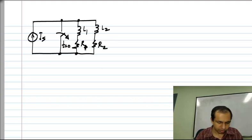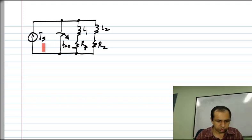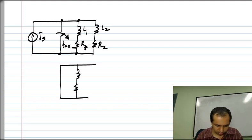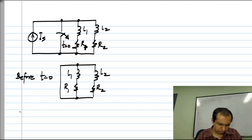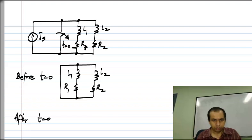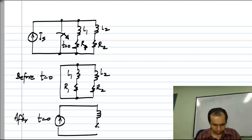First, we will determine the order of the circuit. Before t = 0, the switch is short-circuited and all of the current flows into the short circuit, giving an effective simplified circuit. After t = 0, we have the current source driving these two branches in parallel, giving us the initial conditions.